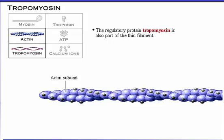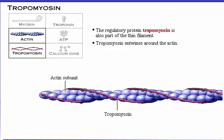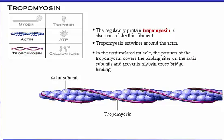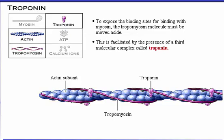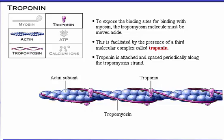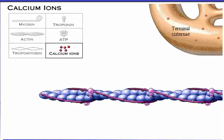In the unstimulated muscle, the position of the tropomyosin covers the binding sites on the actin subunits and prevents myosin crossbridge binding. To expose the binding sites for binding with myosin, the tropomyosin molecule must be moved aside. This is facilitated by the presence of a third molecular complex called troponin. Troponin is attached and spaced periodically along the tropomyosin strand. Troponin by itself is not able to move the tropomyosin away from the binding sites — this process requires calcium ions.